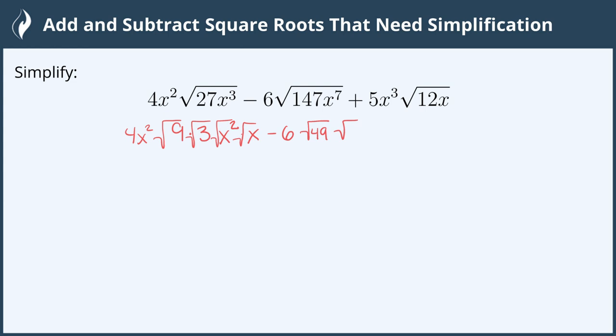x⁷ is not a perfect square but we can make it one by breaking it into x⁶. Any even exponent is a perfect square. And one more x makes up our x⁷.